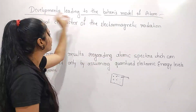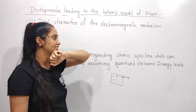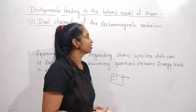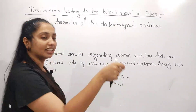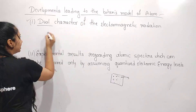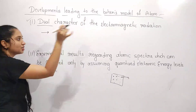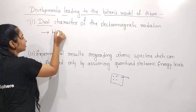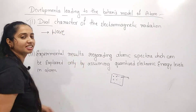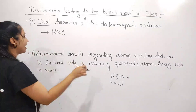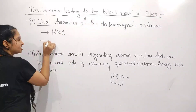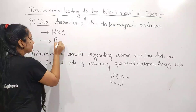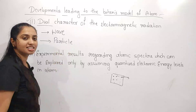Dual character of electromagnetic radiation — the word 'dual' means double. So dual character of electromagnetic radiation means that electromagnetic radiations behave as a wave; they possess a wave form. And electromagnetic radiations also exist in the form of particles — they behave as particles also.